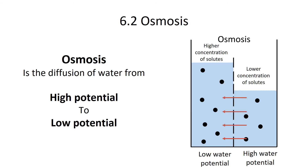Osmosis is a special case of diffusion for water. Water diffuses just like a solute, except water can also diffuse through membranes where solutes like electrolytes cannot. Water will always move from high potential to low potential. Where you have a higher concentration of solutes, you have lower water potential; where you have a lower concentration of solutes, you have high water potential. Water always moves from high water potential to low water potential.